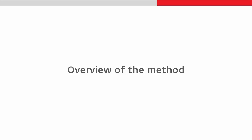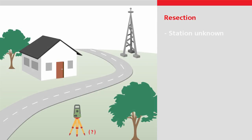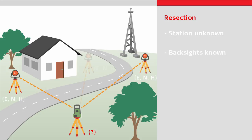The resection method can be used in the following case: the total station is not located over any point of known coordinates, and there are at least two backsight points which can be measured to. The position, height and orientation of the total station will then be computed based on the measurements to the backsights.